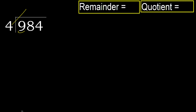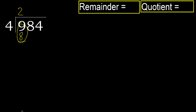4 multiplied by 3 is 12 — 12 is greater. 4 multiplied by 2 is 8, which is not greater, so that's ok. 9 minus 8 is 1. Next.